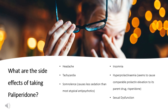Pharmacodynamics. Palliperidone is an atypical antipsychotic developed by Janssen Pharmaceutica. Chemically, palliperidone is the primary active metabolite of the older antipsychotic risperidone. Palliperidone is 9-hydroxyrisperidone. The mechanism of action is unknown, but it is likely to act via a similar pathway to risperidone.